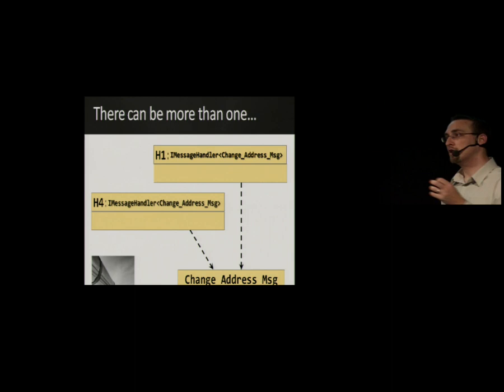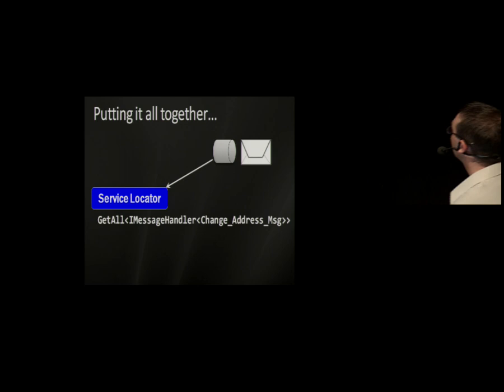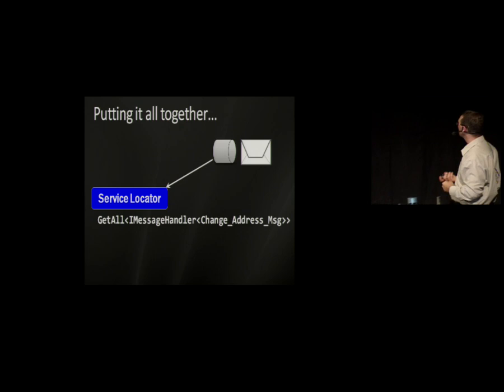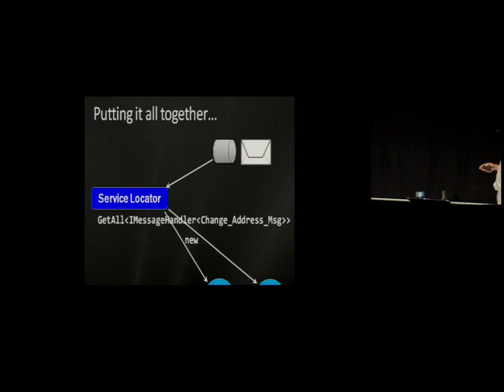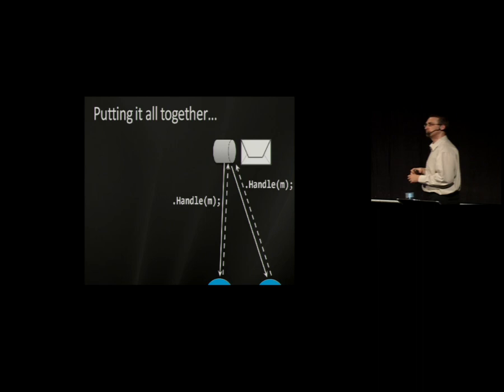By having a hook for the use case, many problems become simpler. A message comes in off the queue, the infrastructure finds all message handlers for that message type, creates them, and calls handle one after another. We can add a third handler and configure the ordering later — chain of responsibility or pipeline is a small change to the service locator. No need to predict it in advance.